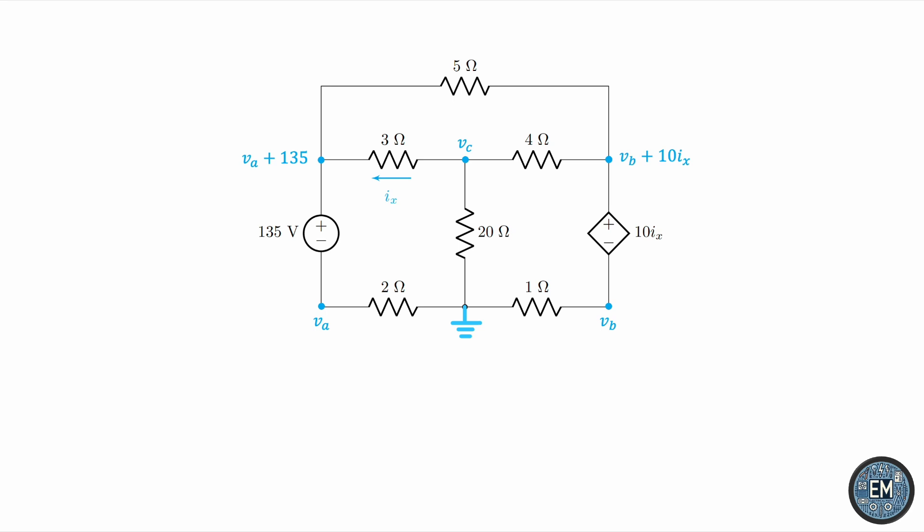Now, we also have IX as one of our unknowns, but we'll deal with this later. Using the node voltage method entails writing KCL equations. Before we're able to do that, let's assign directions. We'll say this current leaves the voltage source. IX also combines with it, entering this node.